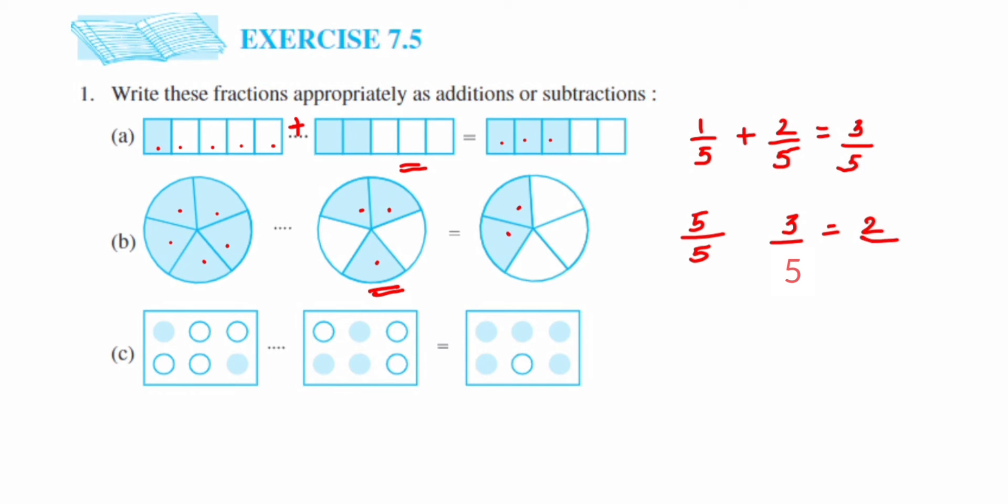So to this five and three, what should we do to get two? So it's a subtraction, so here we're going to get minus.